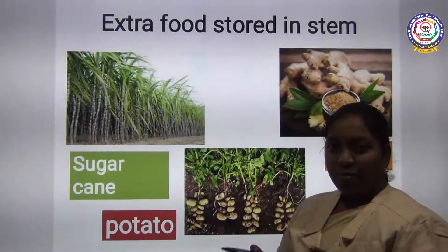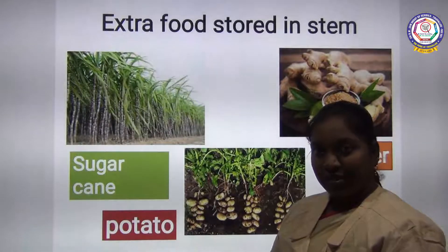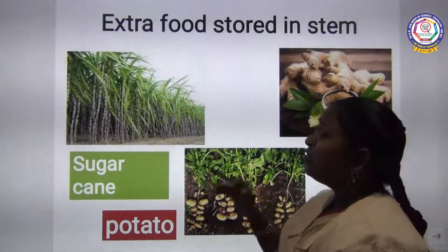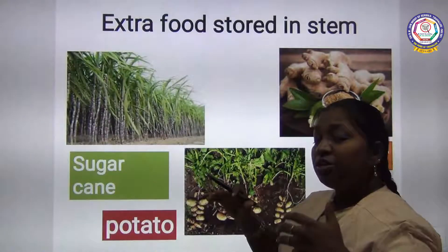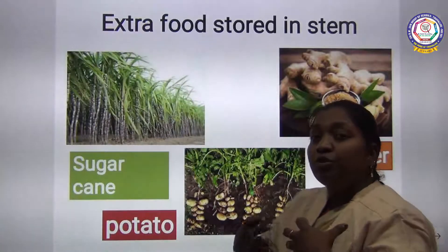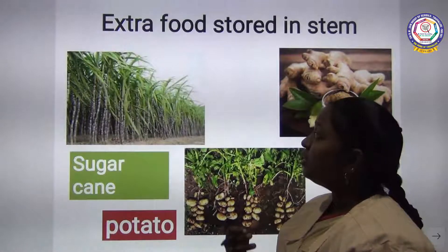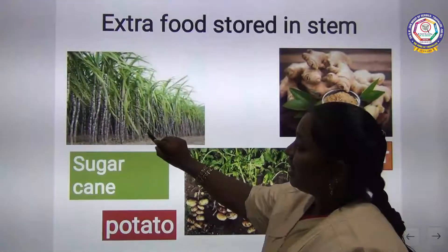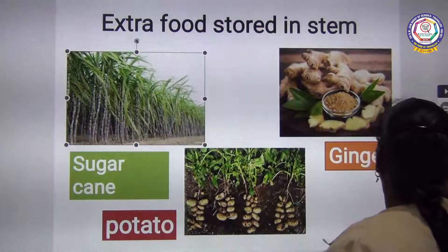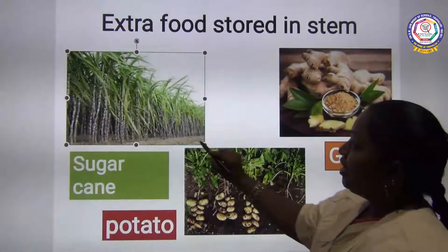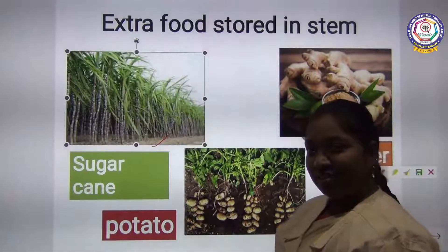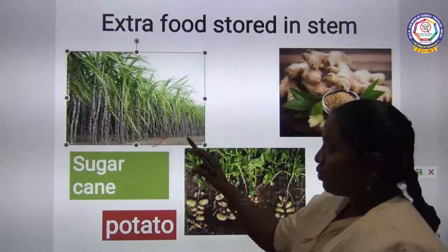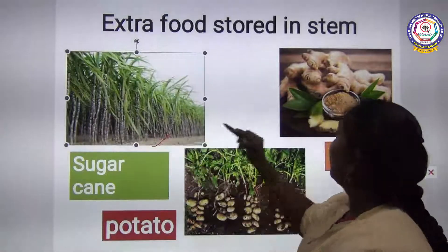You know that a plant can prepare its own food, and the stem helps in this too. The stem also stores food. The stored food in the stem is what we sometimes eat. For example, sugar cane — it is so sweet to taste. You would have seen this during festival time. Sugar cane is also a stem part.